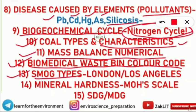The thirteenth topic is smog types. Fog plus smoke equals smog. London smog and Los Angeles smog — which is reducing in nature, which is not, when each was first seen, and which came earlier. These distinctions are important.